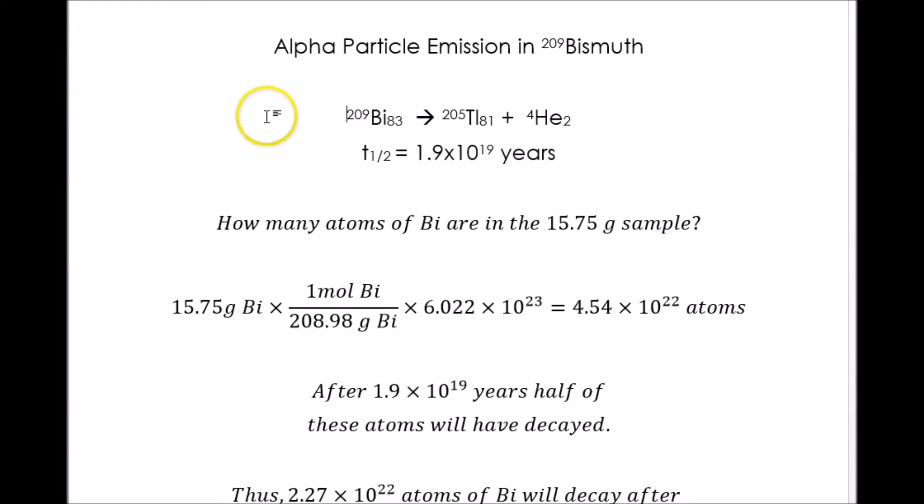As I said, bismuth is not very radioactive, but it does emit alpha particles very slowly. When it emits an alpha particle, bismuth-209 becomes thallium-205. The atomic number goes down by two, and the half-life is reported to be 1.9 times 10 to the 19 years. That's much longer than the age of the universe.